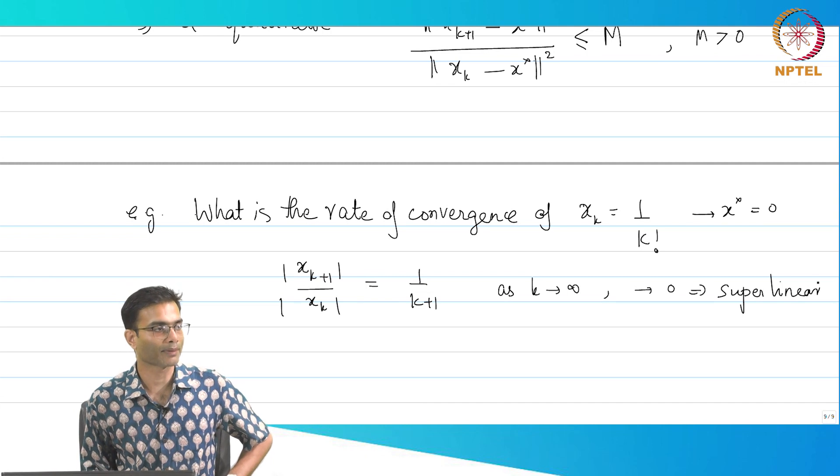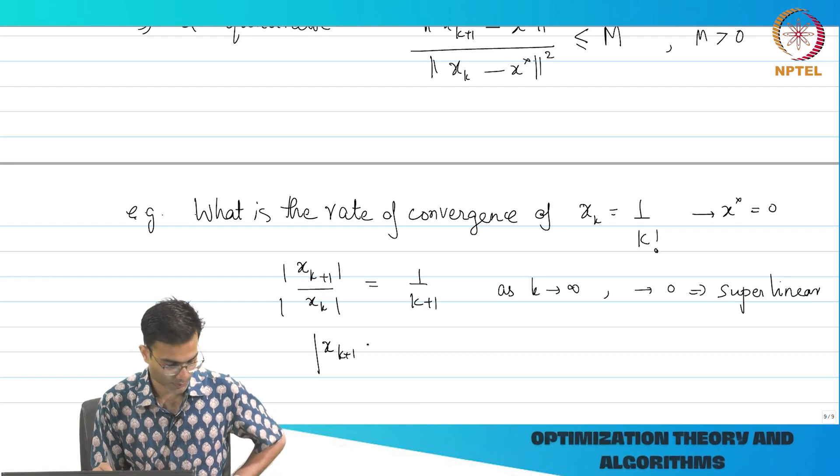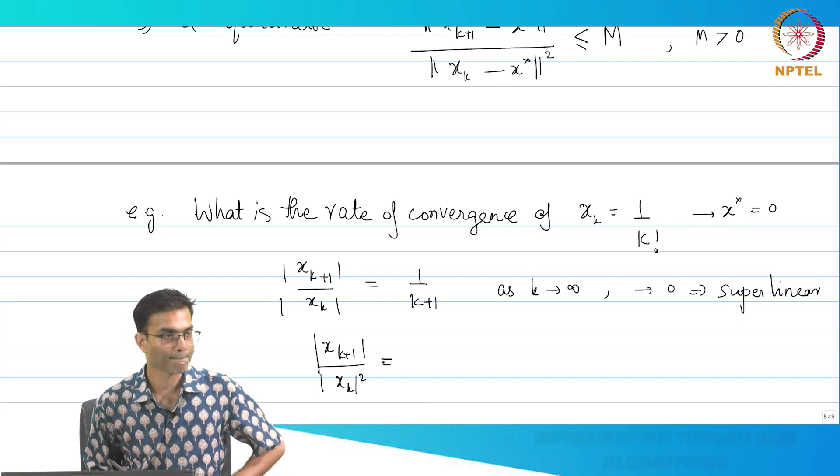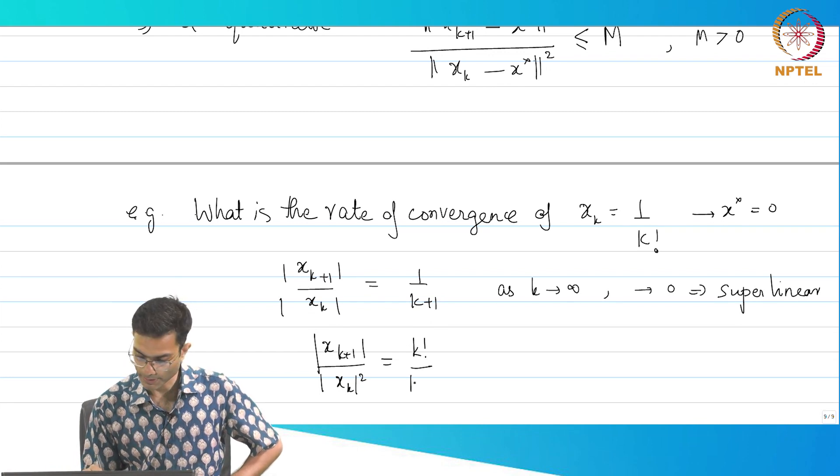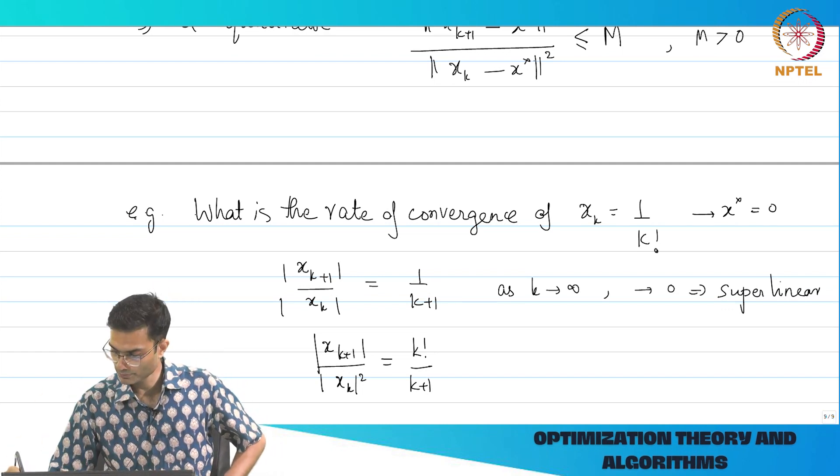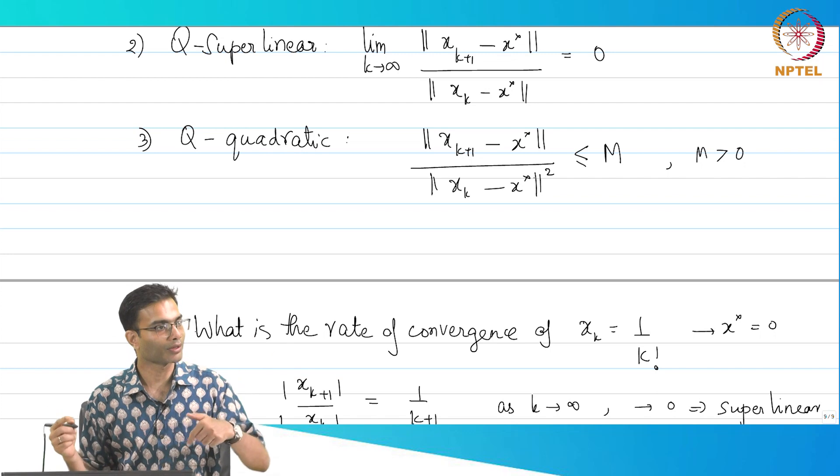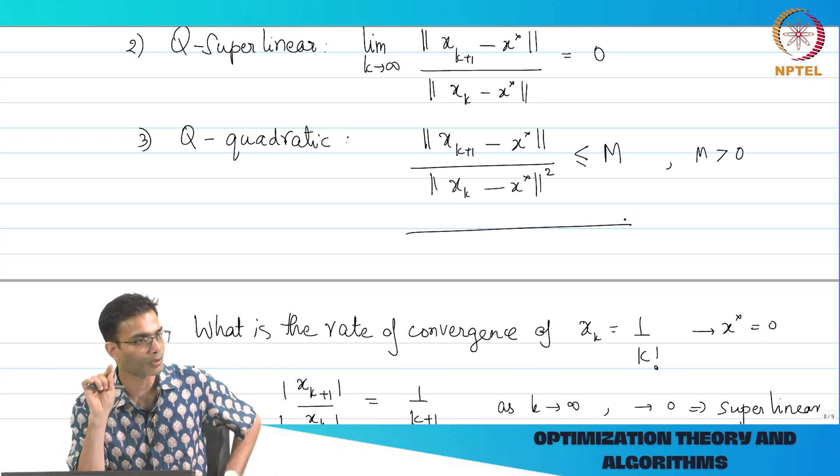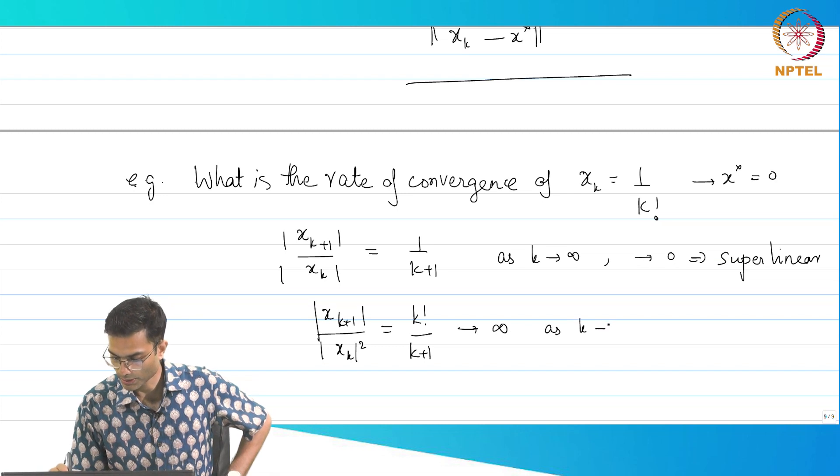Can it also be quadratic? I mean we found this, it is satisfied super linear, but is it also quadratic? Let us just check. So I take x_{k+1} divided by x_k squared, what am I going to get? k factorial divided by k plus 1. What is this limit as k tends to infinity or for large k infinity?